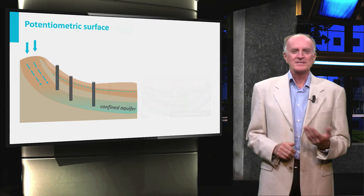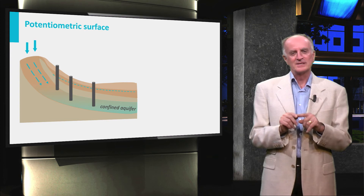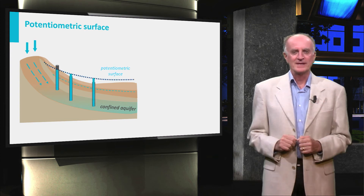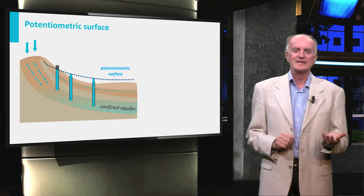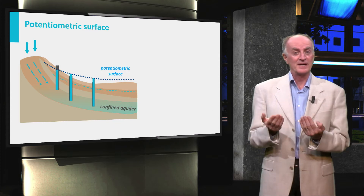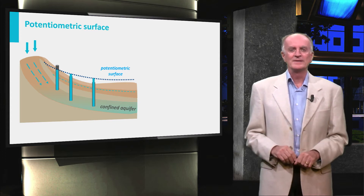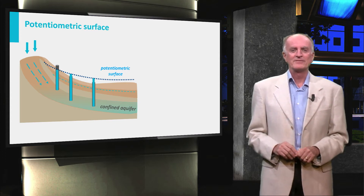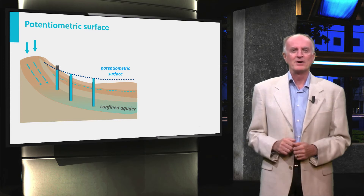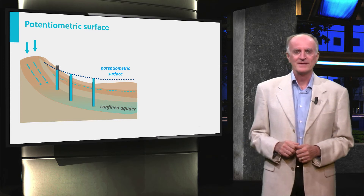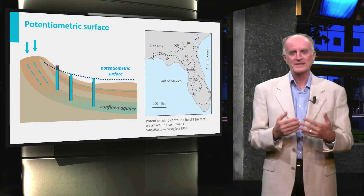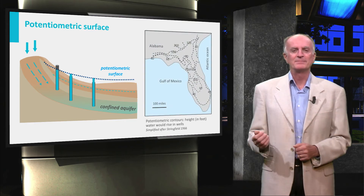Connecting the piezometric levels in the different wells, one defines a potentiometric surface. As you can see in the example in the figure, this surface can be above the ground. Including the same kind of measurements for a region, you can build a map of the potentiometric surface. This is a key document to predict flow patterns in the deep underground.